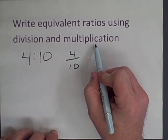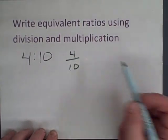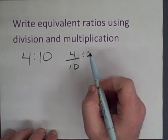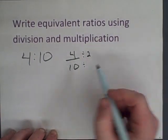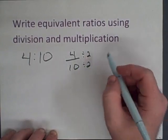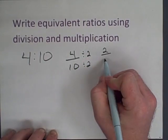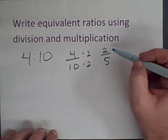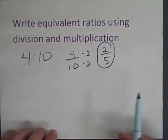Well we could use division and we could simply write it as a fraction four to ten. Now if we use division we could divide both the numerator and the denominator or the numbers of the ratio by two and we would get two out of five. That would be an equivalent ratio to four to ten.